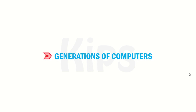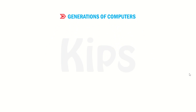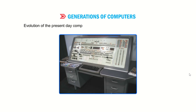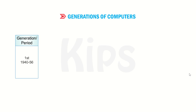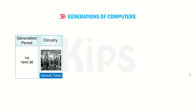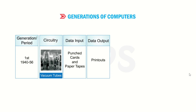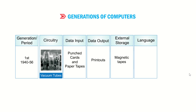Alright children, let us now learn about the generations of computers. Evolution of the present-day computer can be classified into generations. First generation computers, from 1940 to 1956, had circuitry of vacuum tubes. Data input and data output, and external storage was on magnetic tapes. Languages used were machine and assembly language.